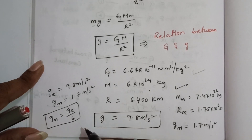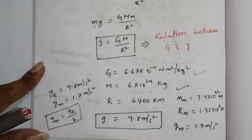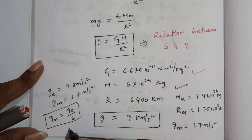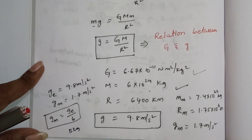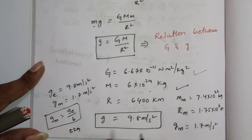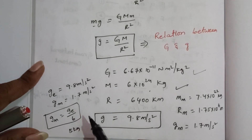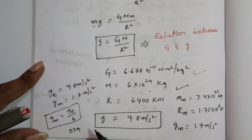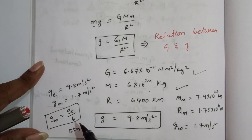Mass is constant everywhere. If you have a 5 kg mass on Earth, the same mass on the Moon is still 5 kg. But since g on the Moon is 6 times less than on Earth, the weight of the body also decreases by 6 times on the Moon compared to Earth.